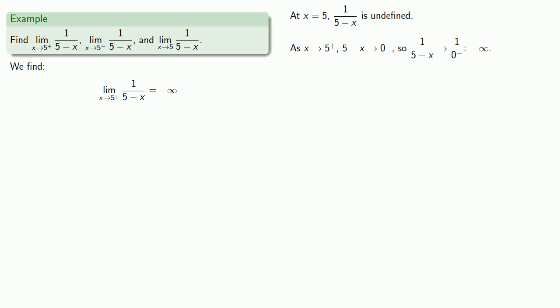Similarly, as x approaches 5 from below, a little bit less than 5, then 5 minus x is going to be a small positive number. So 1 over (5 minus x) is 1 over a small positive number, which is a large positive number. Our limit as x approaches 5 from below is infinity.